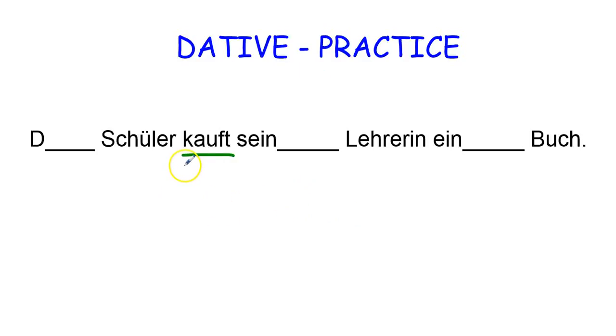So for dative practice, we're going to go through the four steps. We have the verb, buys. Who or what buys? The male student.